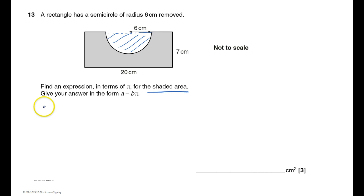So the area of the rectangle is length times width so it's 20 times by 7 is 140 centimeters squared.